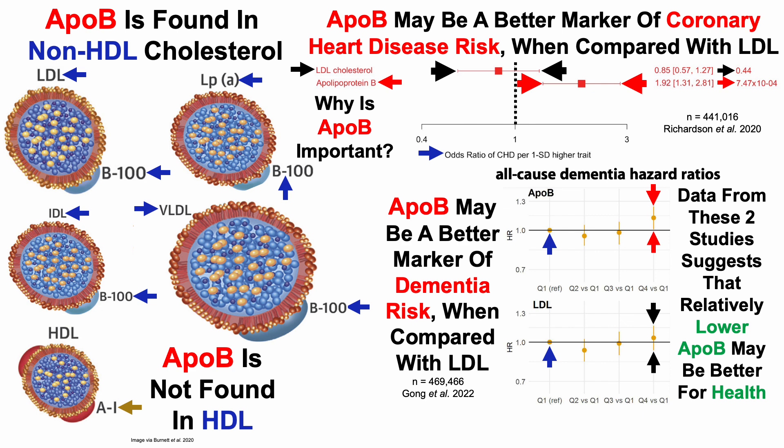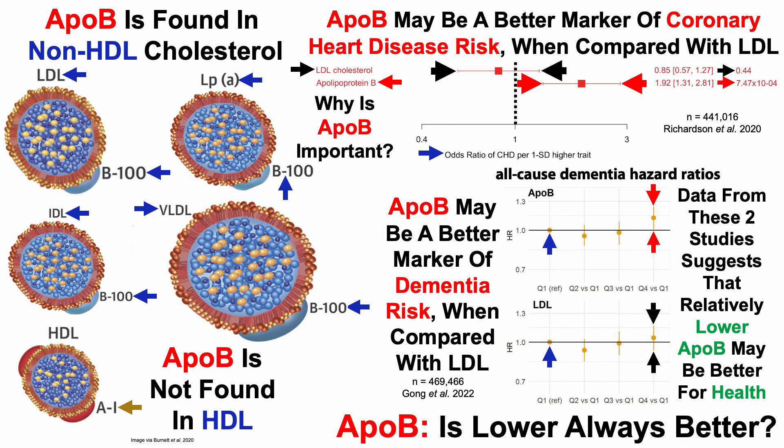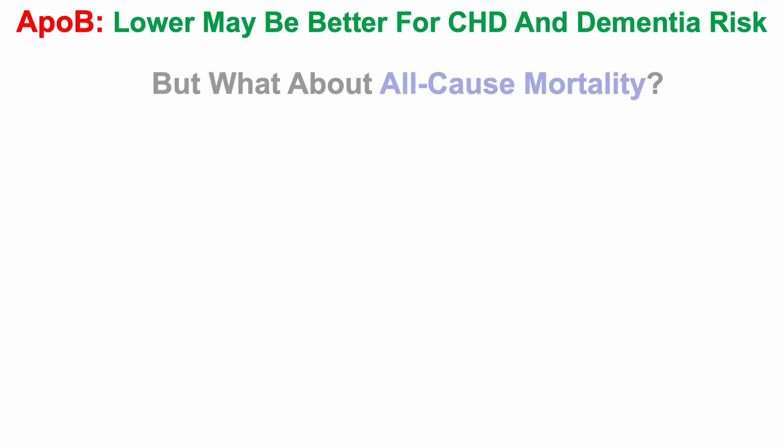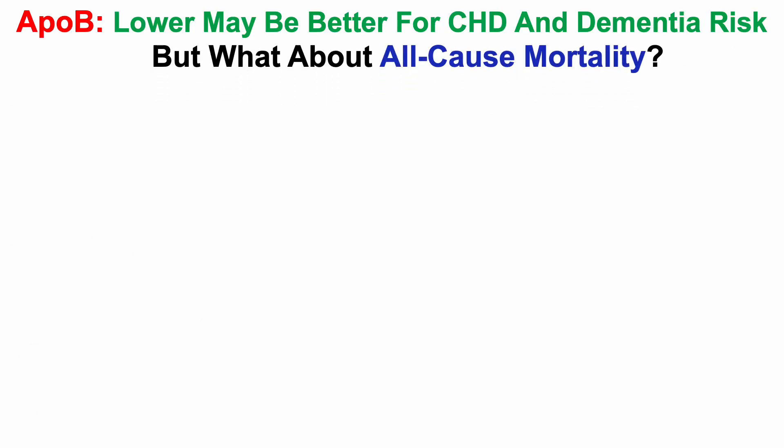So based on these data from these two studies, that suggests that relatively lower APO-B may be better for health. But is that true? Is lower always better for APO-B? More specifically, what about all-cause mortality risk?